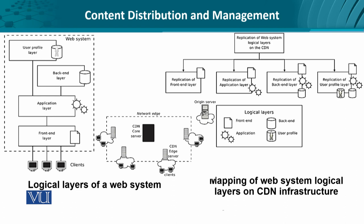Let's look at this in three steps. We can think about all these as the logical layers of a web system, where clients talk to the front-end layer, which in turn interacts with the application layer. The application layer is connected to the backend layer and the user profile layer, and runs dynamic applications generating content at the front-end. The diagram in the middle visualizes the relationship between the core server and the edge servers, which provide replication facility to all these logical components — representing the translation or mapping of web system logical layers onto CDN infrastructure.